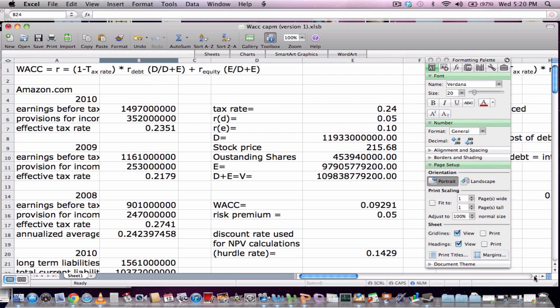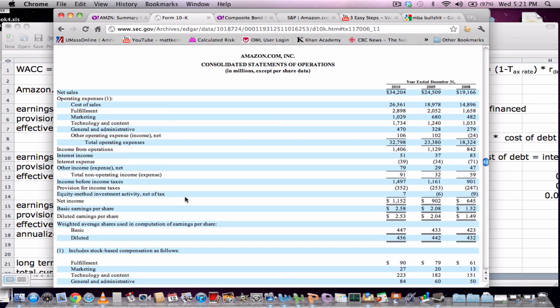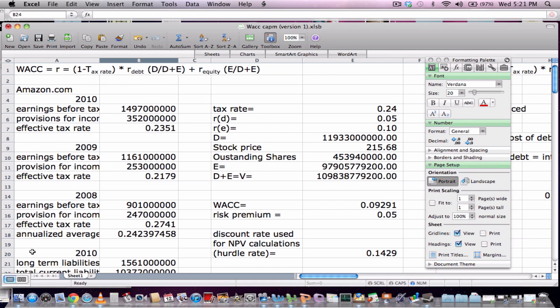To find the tax rate, I went to the SEC filings and found their income before income taxes and the provision for income taxes for the past three years. It is probably a better idea to do it for the past five years because, as you can see, their tax strategies have changed over the years.